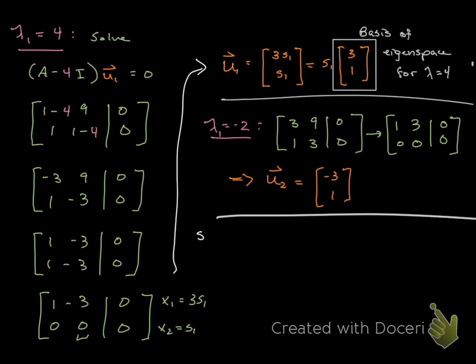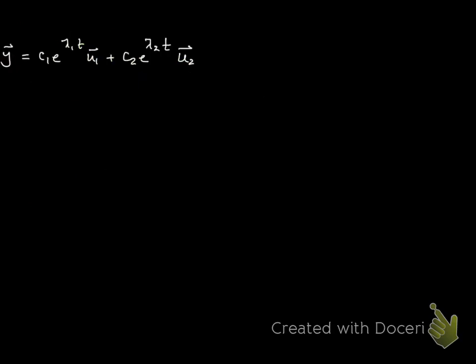We have y = c₁e^(λ₁t)u₁ + c₂e^(λ₂t)u₂. Now we know what λ₁, u₁, and λ₂ and u₂ are. Let's just plug those in. So there's our form. I just needed a new page.